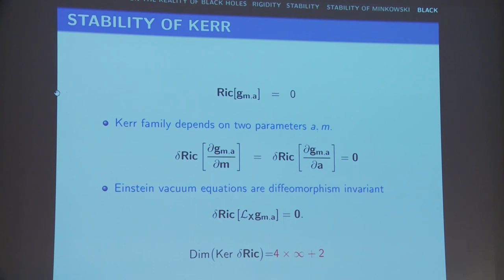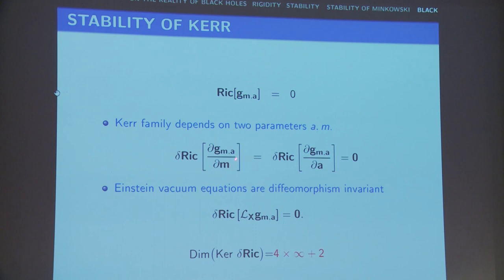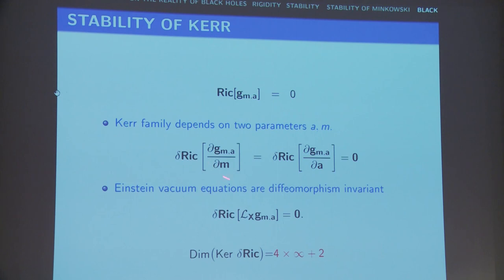These are of course the Einstein equations in vacuum. G_{mA} is a Kerr metric depending on two parameters m and a. If you start varying the parameters, you get solutions of the linearized equations. So dG_m/dm is a solution of the linearized Einstein equations — equal to zero on the right hand side — which is non-trivial. In other words, you get essentially a bound state for the linear equation. The same thing holds for the derivative with respect to a. These are non-trivial solutions of the linearized equation corresponding to essentially zero eigenvalues.